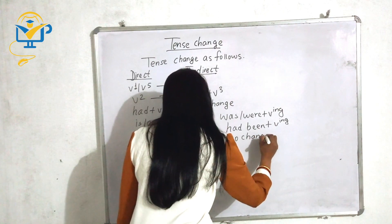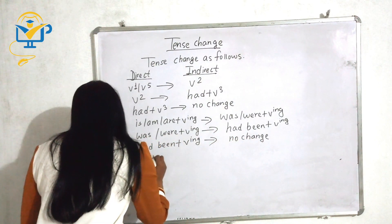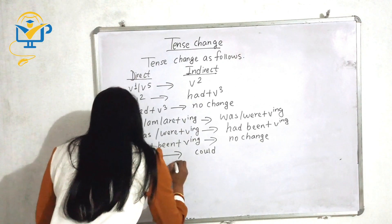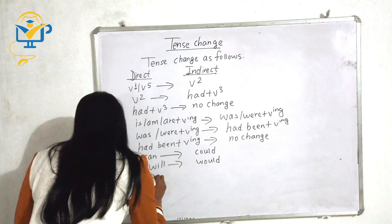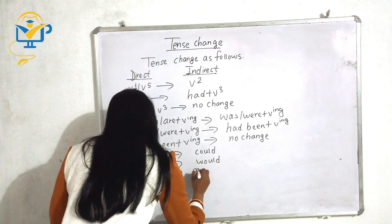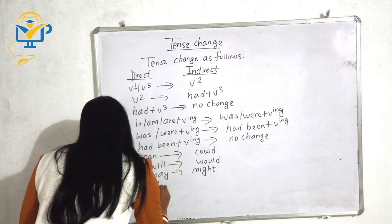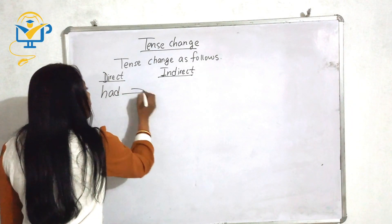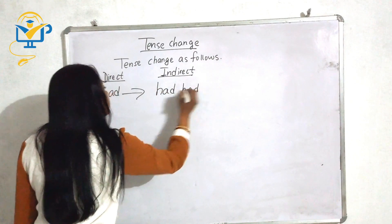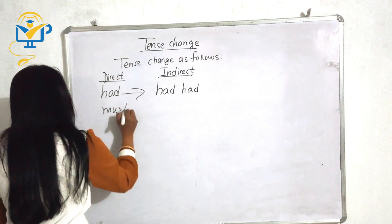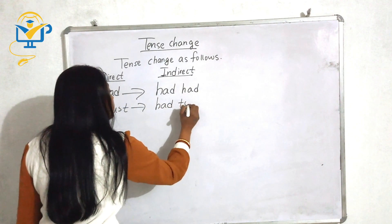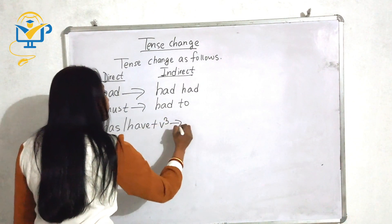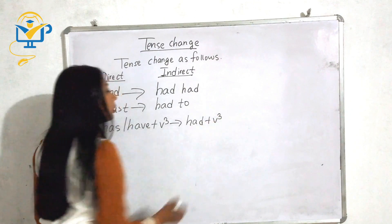Further tense changes: Can changes into could. Will changes into would. May changes into might. Shall changes into should. Must changes into had to. Had changes into had had. Had plus past participle changes into had plus past participle — no change.